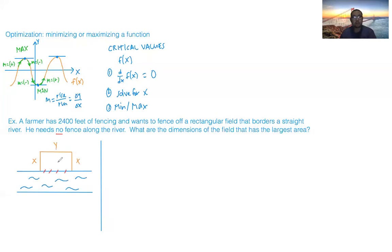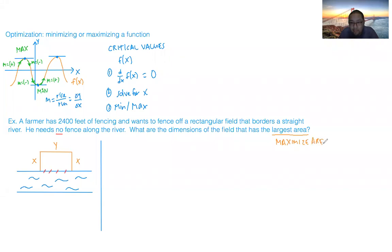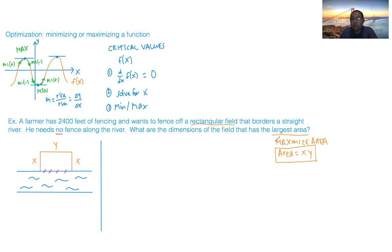Let's call the two equal sides of this partial rectangle x, and the remaining side y. The problem wants us to find the dimensions that maximize the area. The area of a rectangle is length times width, so the area equals x times y. This is the main function we are eventually going to maximize.